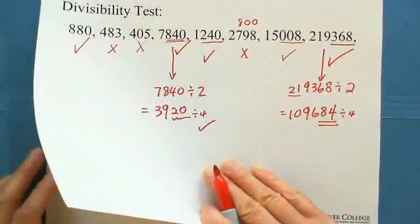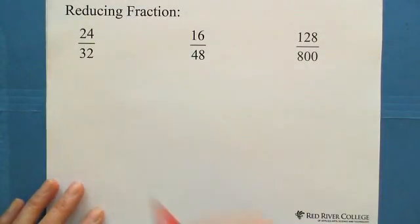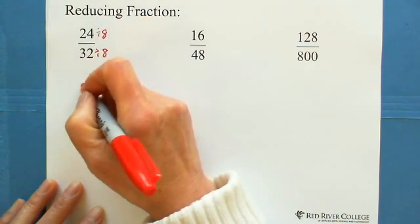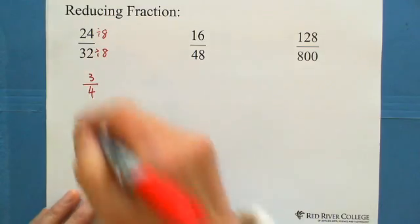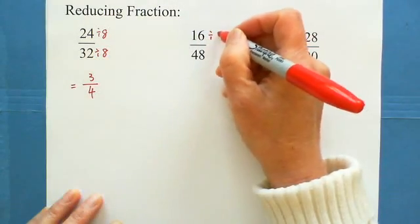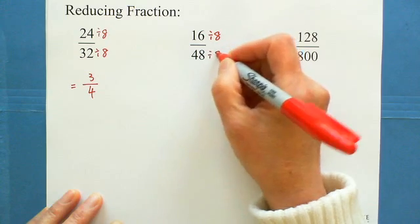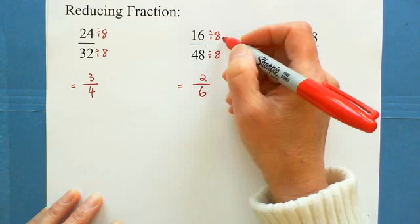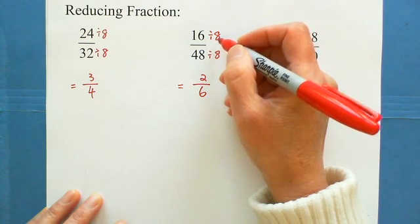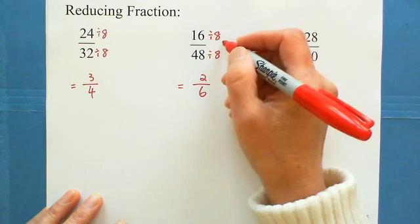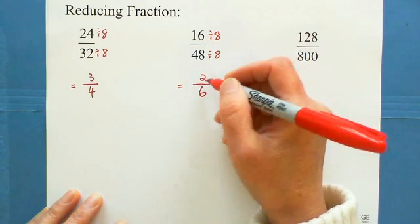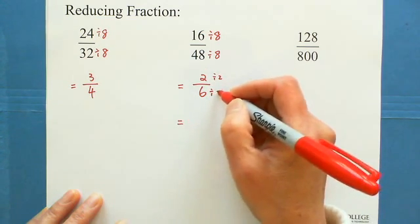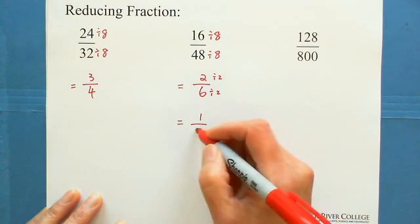Now, reducing fractions using divisibility by 8. For 24 over 32: both are divisible by 8, so divide both by 8 — you get 3 quarters. For 16 over 48: both are divisible by 8. 16 divided by 8 equals 2, and 48 divided by 8 equals 6, giving 2 over 6. Both are still even numbers, so reduce again by dividing by 2 — you get 1 third. Indeed, 16 is 1 third of 48.